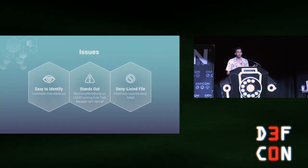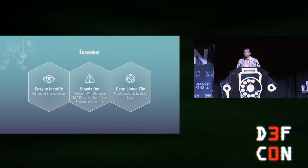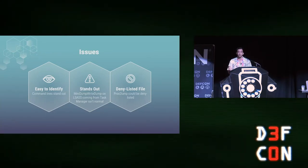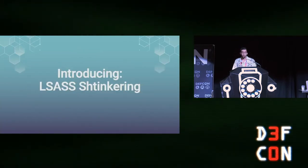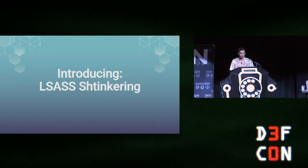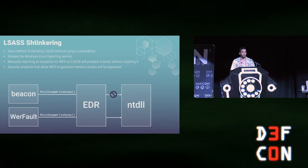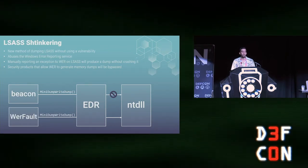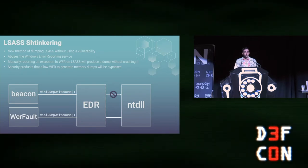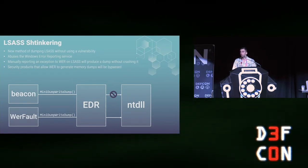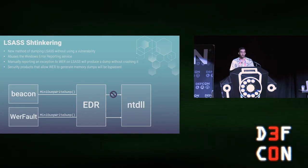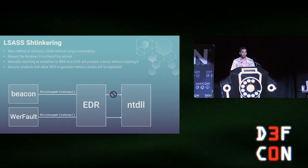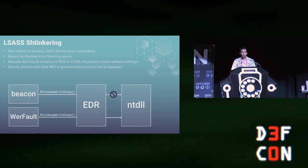We've talked about several dumping techniques and they all have issues: they are easy to identify either by their command line or the APIs they use, and some tools may be blocked by security products. So now let's talk about LSASS Sinkering — a new method to dump the memory of LSASS that doesn't use a vulnerability. It abuses the Windows Error Reporting service. We are going to manually report an error to this service that will make it think an exception occurred inside LSASS, and then it will produce a memory dump for us without terminating it — bypassing security products that allow processes like WerFault to dump LSASS memory.